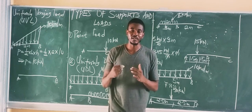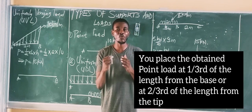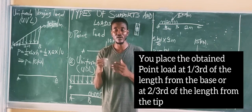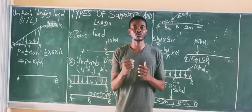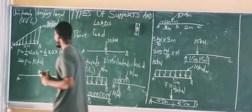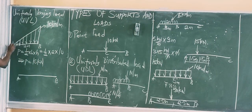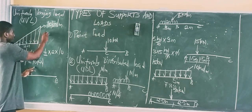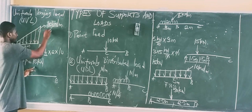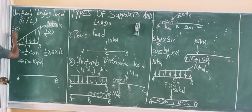After converting the UVL to a point load, you need to place this point load on the beam. Place it at 1/3 of the length from the base, or 2/3 of the length from the tip. In this example, the length is 2 meters, so 1/3 × 2 = 2/3 meters from the base, or 2/3 × 2 = 4/3 meters from the tip.